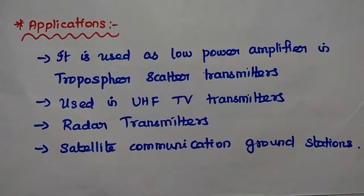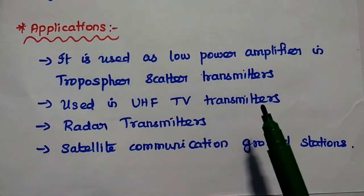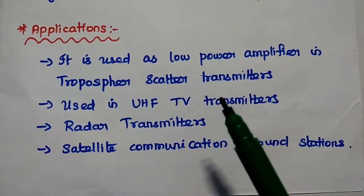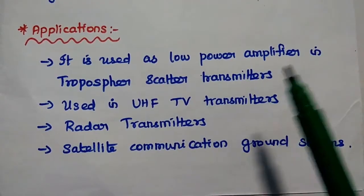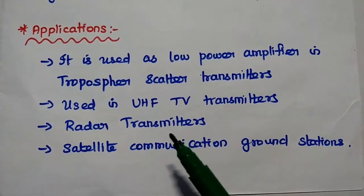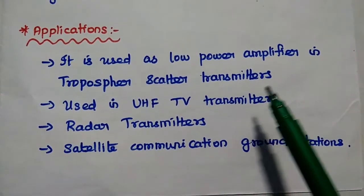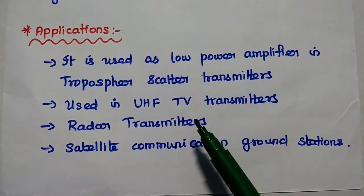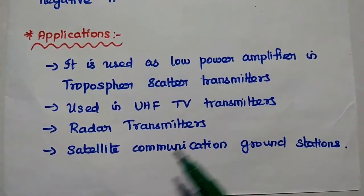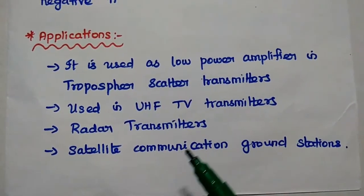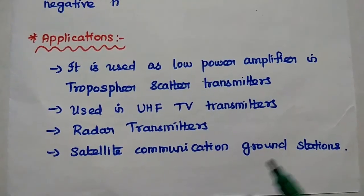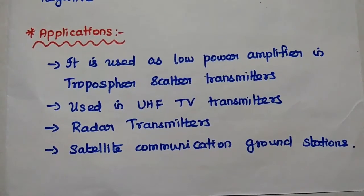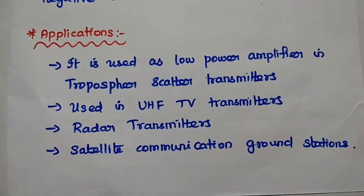The applications of the klystron amplifier include its use as a low-power microwave amplifier in troposcatter transmitters, UHF TV transmitters, radar transmitters, and satellite communication ground stations. These are the major applications of the klystron amplifier.